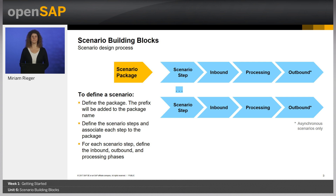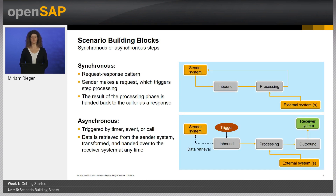To define a new scenario: first, define the package and provide a name — the prefix specified in the development profile will be added to the package name. Then define each scenario step and associate it with the package. For each scenario step, define the inbound, outbound, and processing phases. The outbound definition is only required for asynchronous steps where data is sent to a receiver system. A step models a specific interaction between two systems, either synchronous or asynchronous, and you can have a mix of both in one package. For a simple business process there will be just one step; for a more complex process there can be several steps.